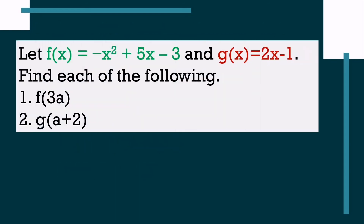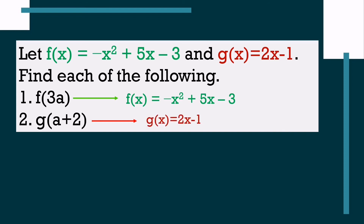At this point, let us try these examples. Let f(x) equal negative x squared plus 5x minus 3, and g(x) equal 2x minus 1. Find: number 1, f(3a); and number 2, g(a plus 2). To answer this, just look at the function name — for number 1 we use function f, and for number 2 we use function g.